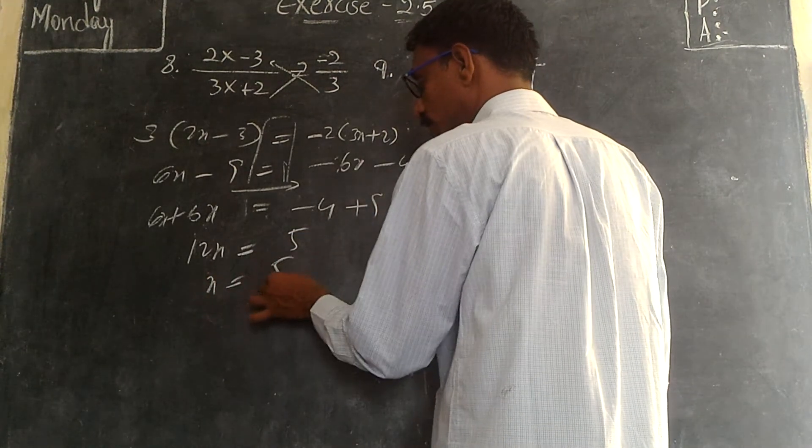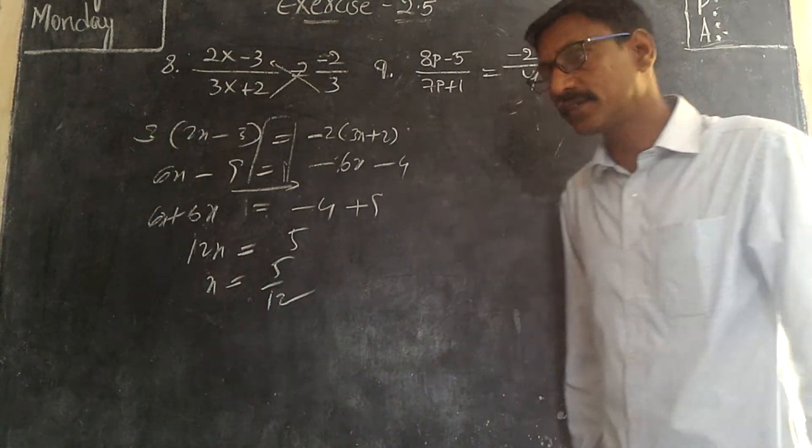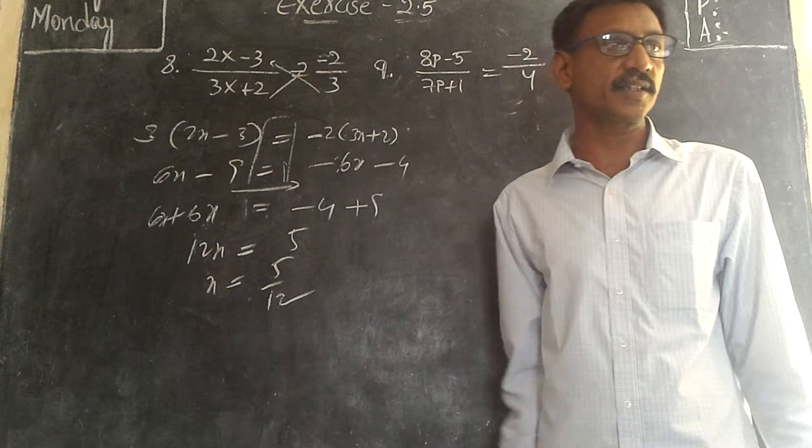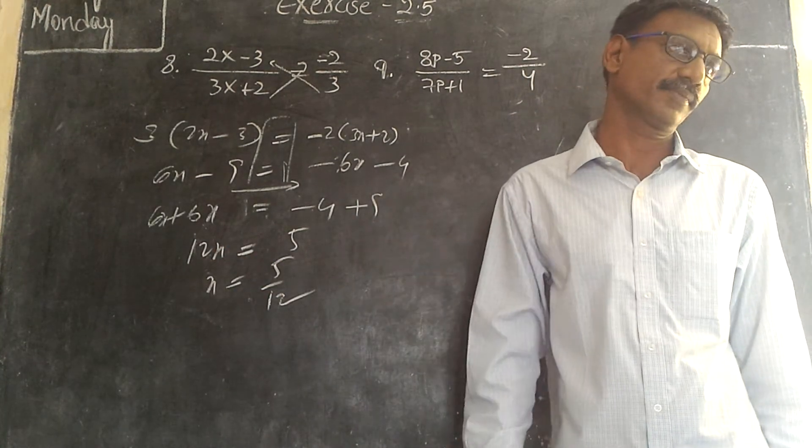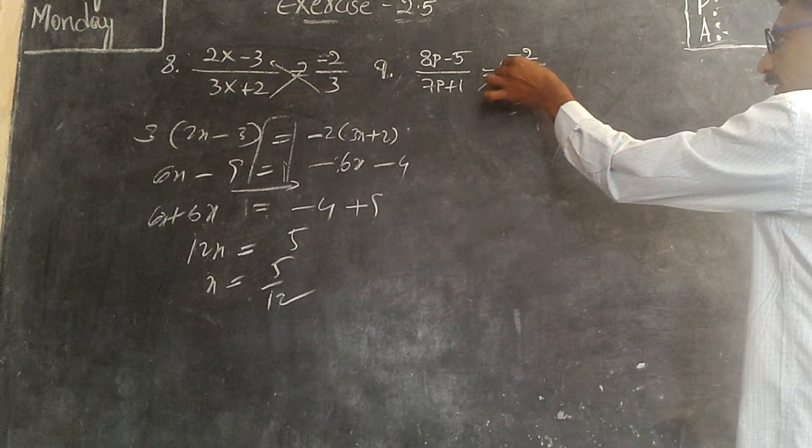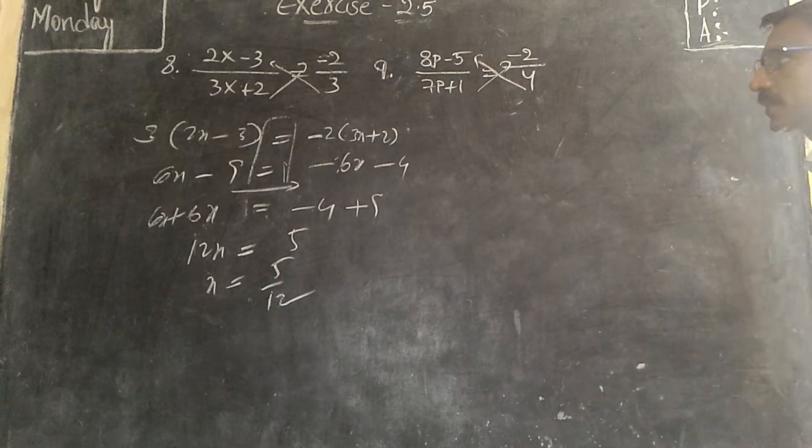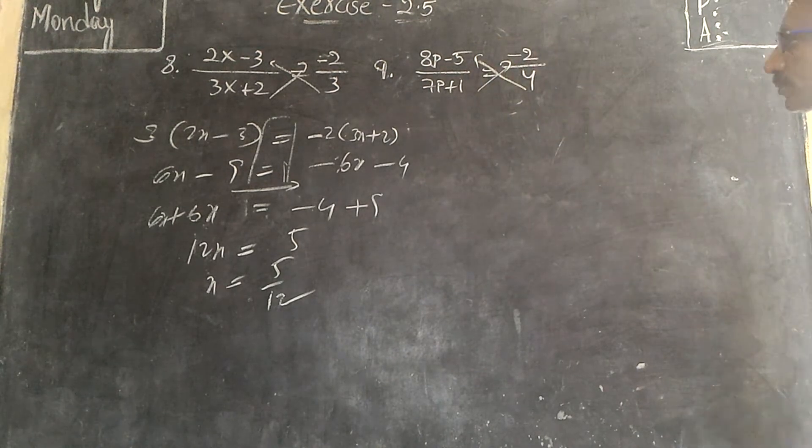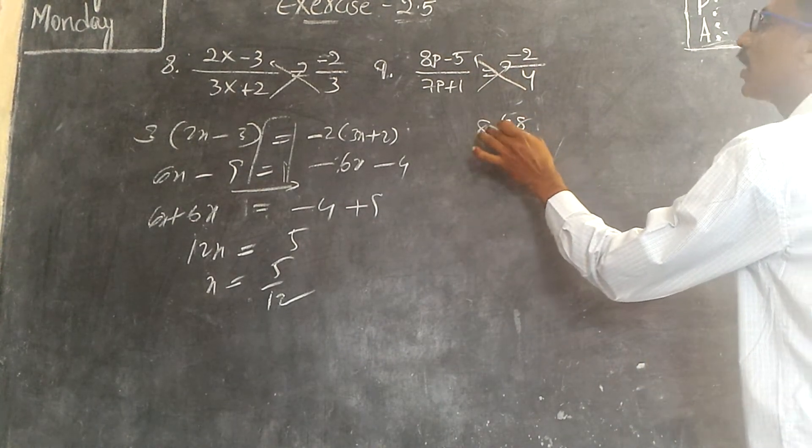So x is equal to 5 by 12. Why? The 5 here multiplying will go to that side and divide. Similarly, this is multiplied by this and this is multiplied by this. Already explained. So, 4 into 8p minus 5.